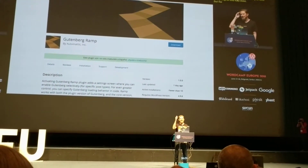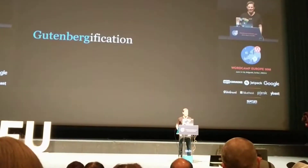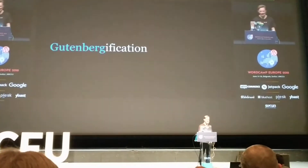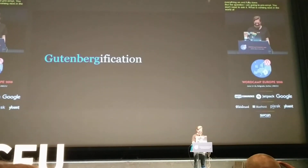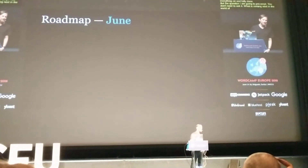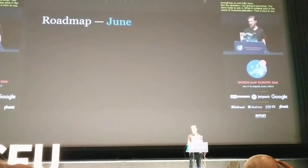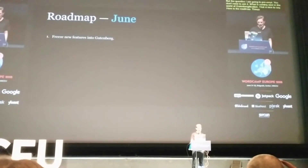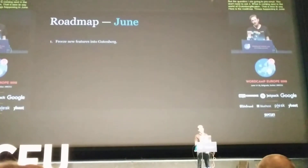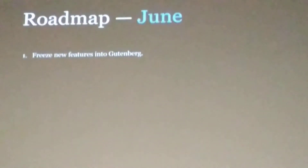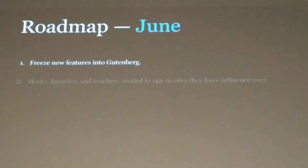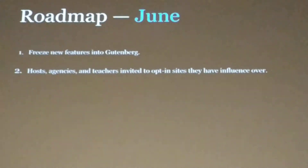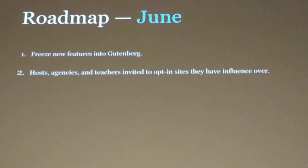The question I'm going to preempt is: what's coming next in the world of Gutenbergification? Here's the road map. Things happening in June are highly imminent. First, we're going to freeze new features coming into Gutenberg. We've reached a point where the functionality matches and in many areas exceeds what we accomplished with the legacy editor. We're going to encourage hosts, agencies, and teachers to start opting in folks they have influence over to start using Gutenberg.